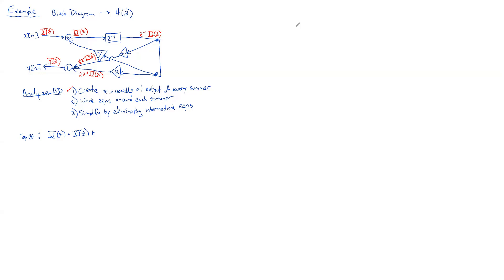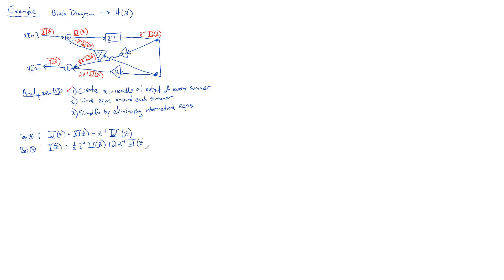The equations just fall apart — the output equals the two inputs X(z) plus whatever's coming up the feedback path, which is −z⁻¹·W(z). This kind of feedback would be very difficult to evaluate by hand since you'd have to do multiple loops, but not so with Z-transforms. For the bottom summer, Y(z) equals the sum of the two parts feeding into it: (1/2)z⁻¹·W(z) + 2z⁻¹·W(z). Step two is done.